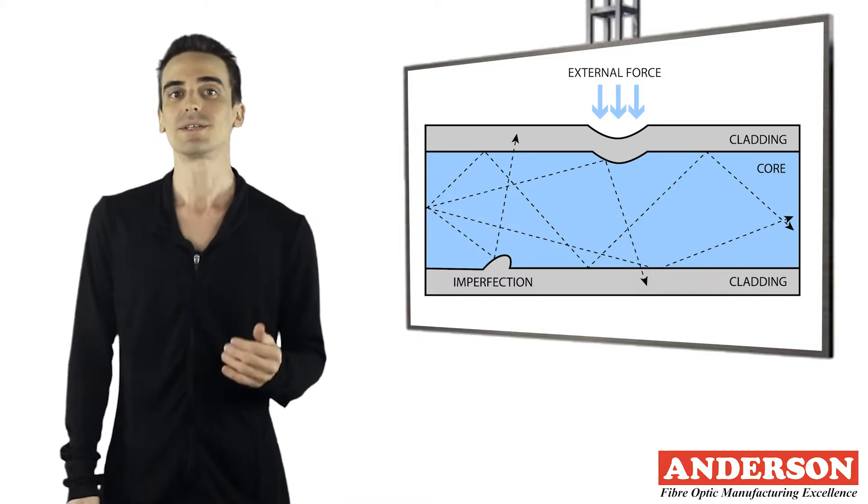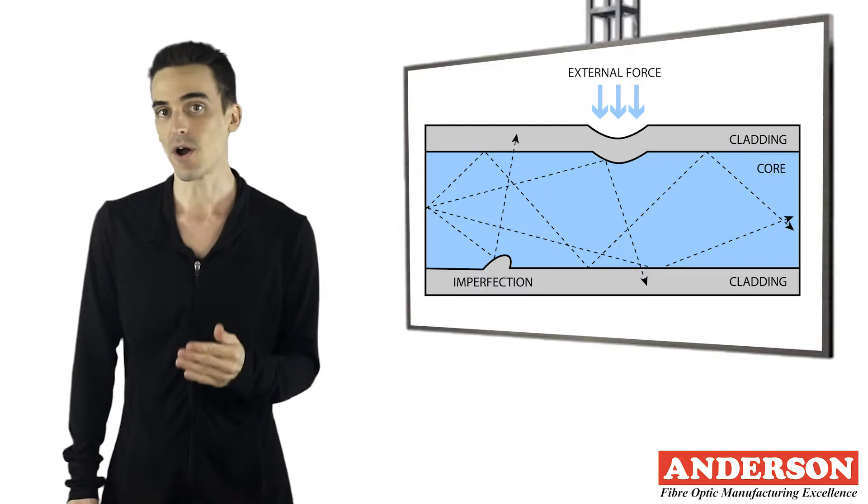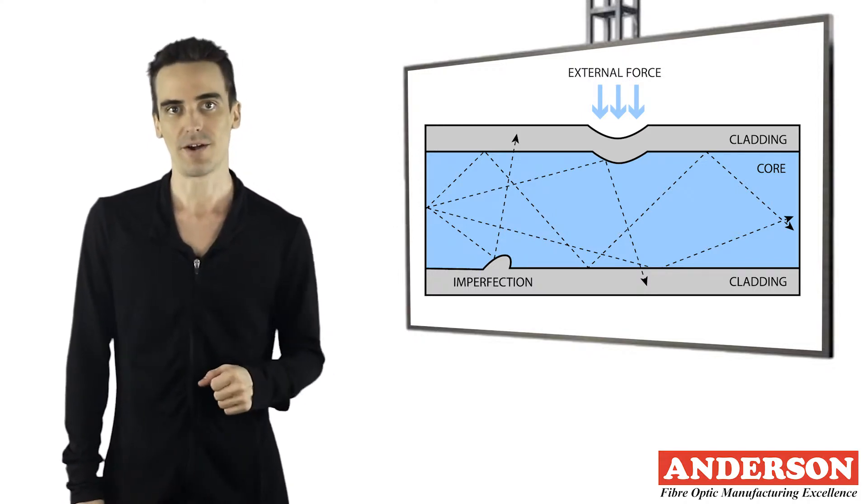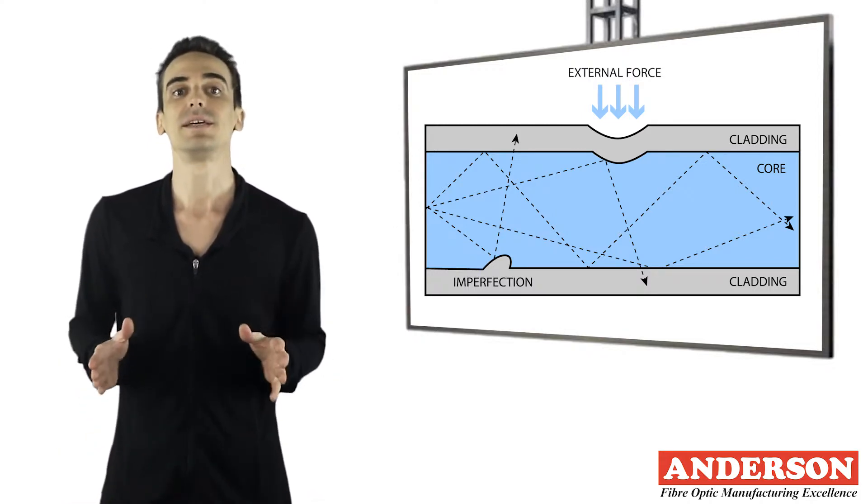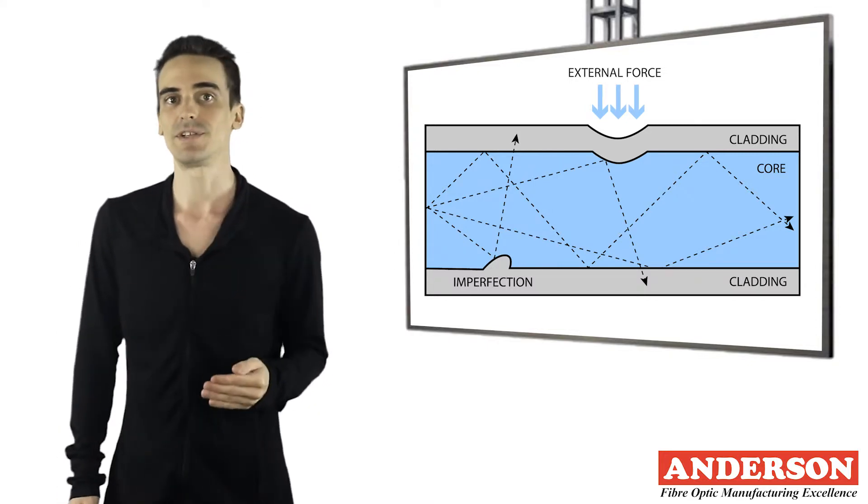Of these, Rayleigh is the dominant loss mechanism in the low absorption silica window between 800 and 1700 nanometers.